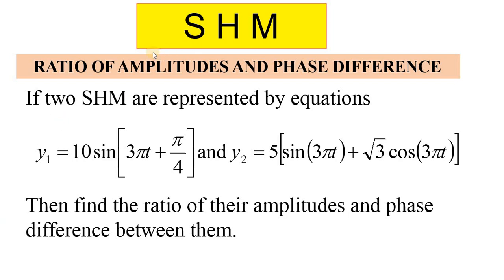Hello students. In this video we are going to discuss a very important question from the chapter simple harmonic motion. The question states: if two SHMs are represented by the equations y1 = 10 sin(3πt + π/4) and y2 = 5 sin(3πt) + √3 cos(3πt), then find the ratio of their amplitudes and the phase difference between them.